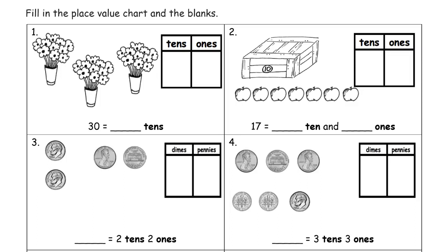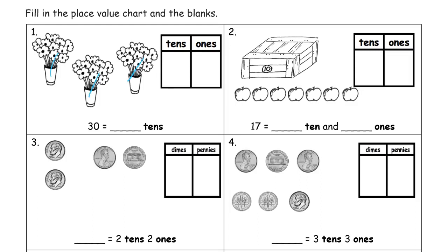But first we're looking at this place value chart and the blanks. So here we've got 10, 20, 30. How many tens is that? It's one, two, three tens. The place value box, this is not a 30. Remember it's a place value box. We're writing how many tens there are. There are three groups of 10 and there are zero ones left over.